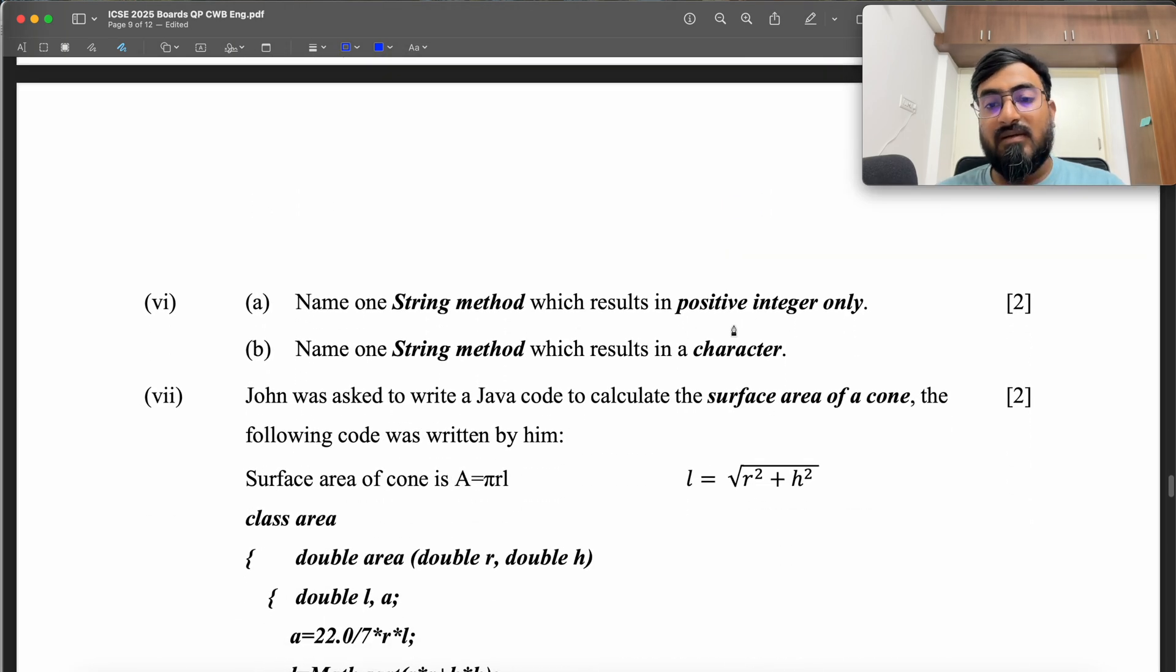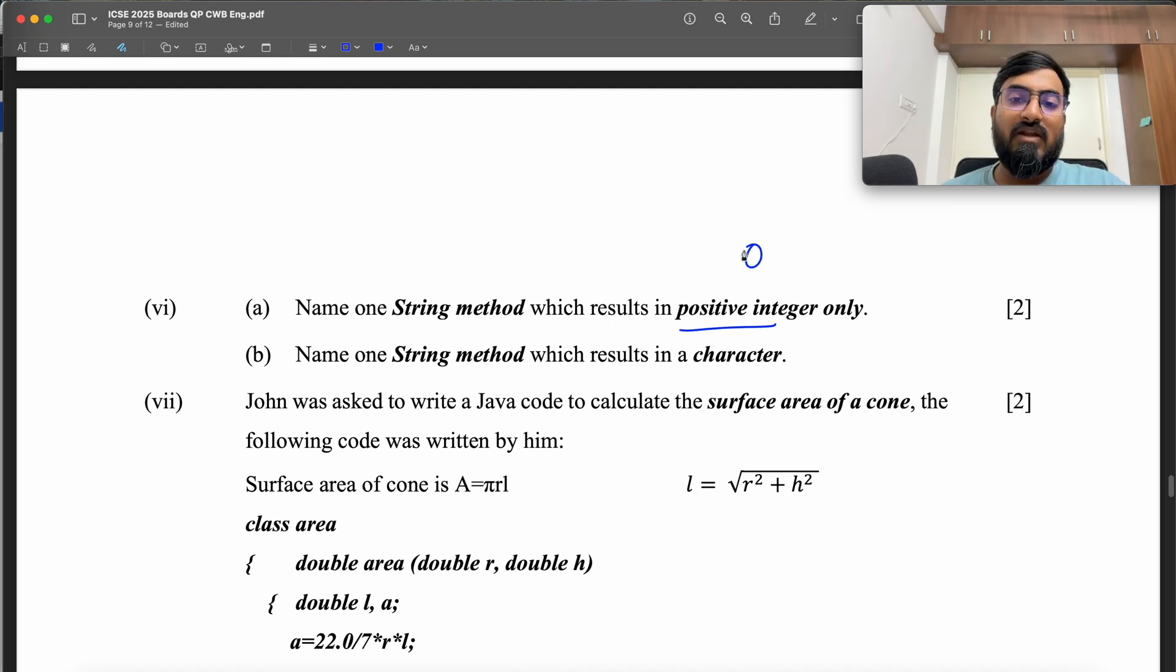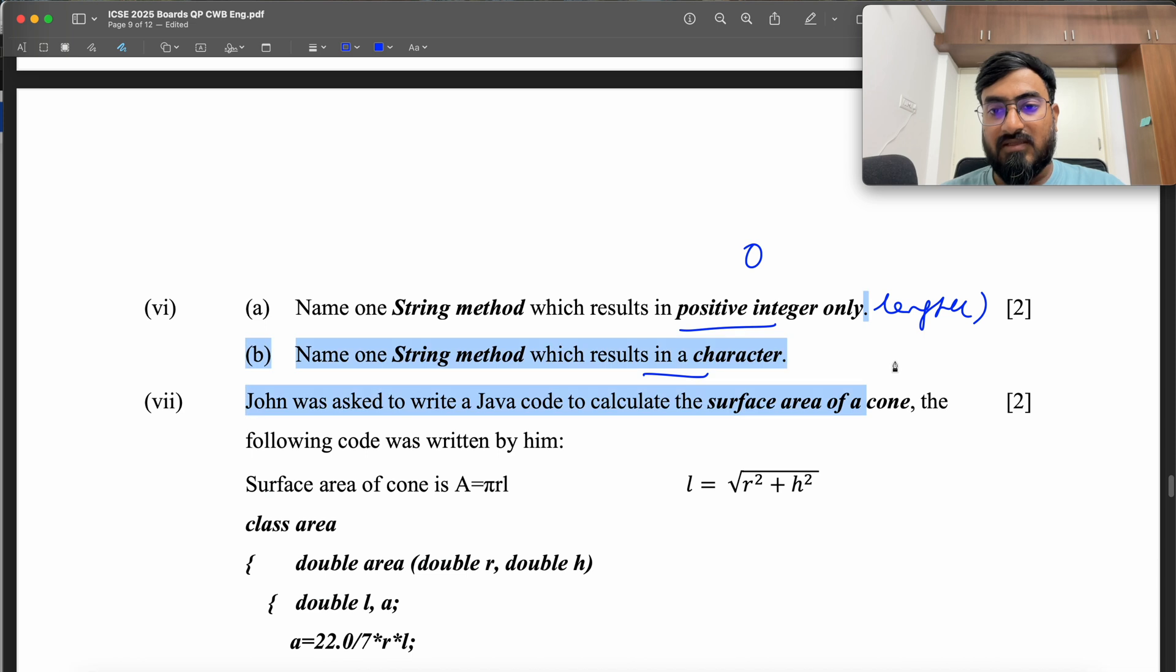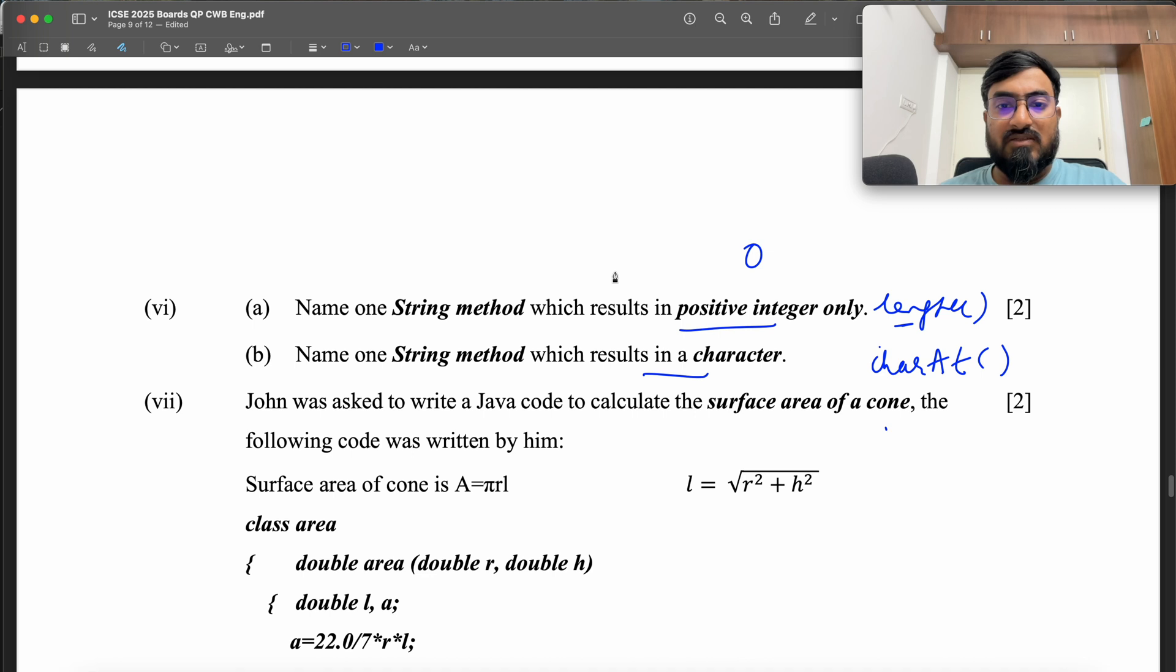One string method that results in a positive integer only. Length can be 0, right? 0 is a non-negative integer. It could be length. Length, compare to. Results in a character is going to be charAt method. It gives you the character at the particular index. So you can say charAt, but you have to spell it correctly. So it has to be C-H-A-R or lowercase, and then uppercase A and then lowercase T. charAt method results in a character. So I guess this length is the closest answer.